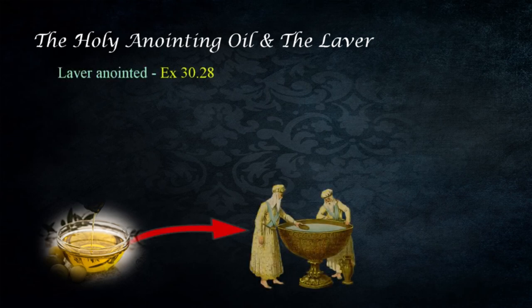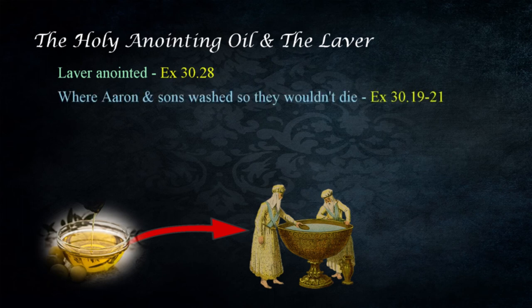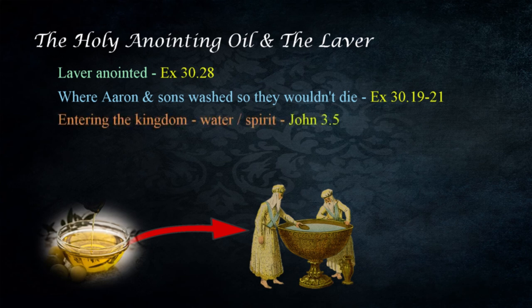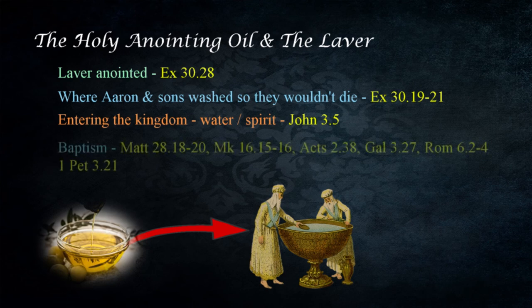The laver was anointed with the holy anointing oil in Exodus 30:28. This was the point at which water was contained for the cleansing of the priests before they entered the tabernacle or offered sacrifices on the altar of burnt offering. Aaron and his sons were to do this so they didn't die — Exodus 30:19–21 — showing the significance of this act. In the New Testament we see a connection between Christ's blood and water. Christ stated that in order to enter the kingdom one must be born again of the water and the Spirit in John 3:5.